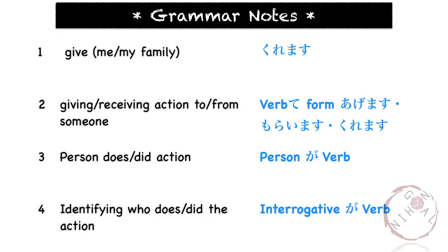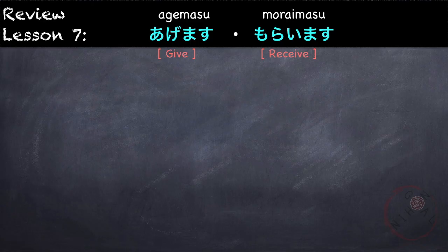Here are the grammar points that we would learn in this lesson. First, let's review agemasu and moraimasu from Lesson 7. Agemasu means to give and moraimasu means to receive.